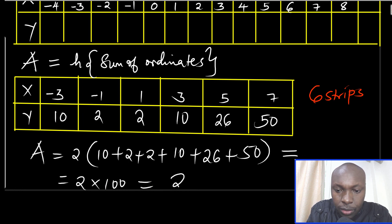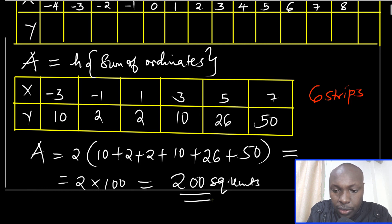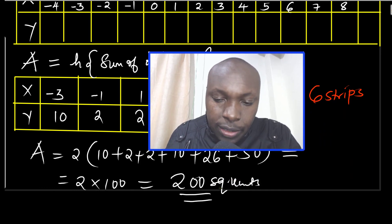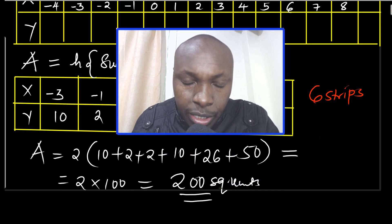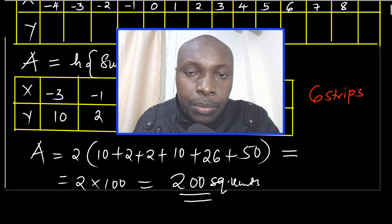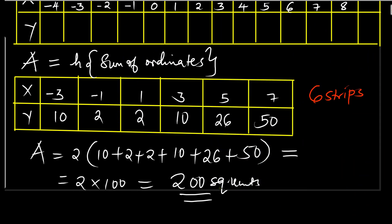Multiplying these gives 200 square units as the area. That is simply how you're supposed to solve that question. Thank you.